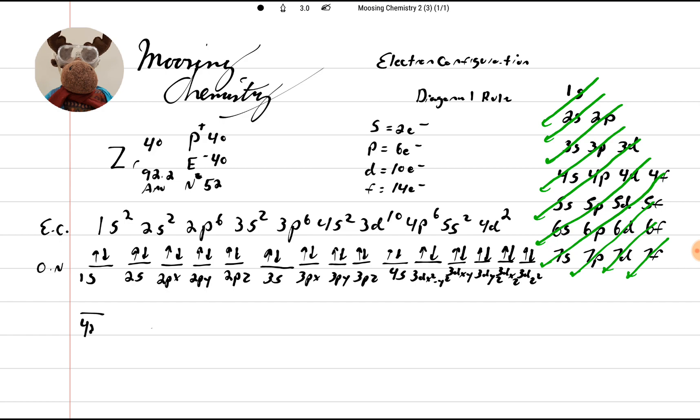So now we come down here and then we come to 4p again. So it's 4px, 4py, 4pz. So we go 1, 2, 3, 4, 5, and 6. Pretty cool so far, huh? I love chemistry. It's so easy.